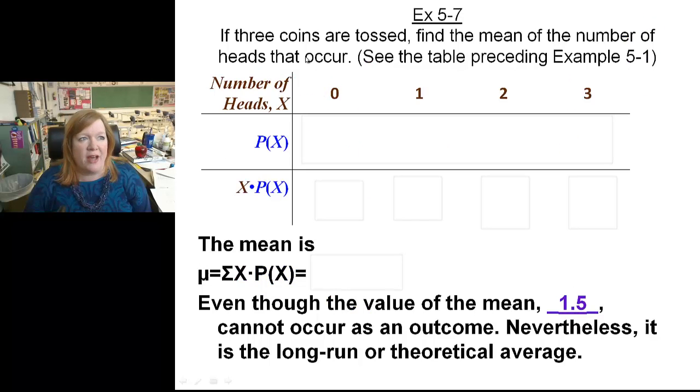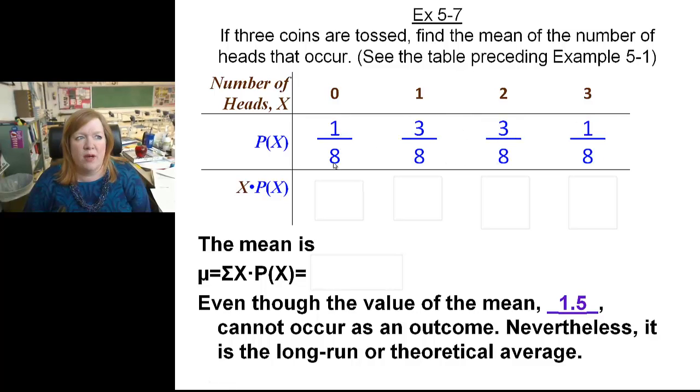Now, three coins tossed in a fountain. Find the mean number of heads that occur. So when we did this one in example five one, we had all the possibilities listed there, and the probabilities were as follows. One eighth, three eighths, three eighths, and one eighth. You can bring out your old notes and check that out. But I ain't lying to you, that's what it was.